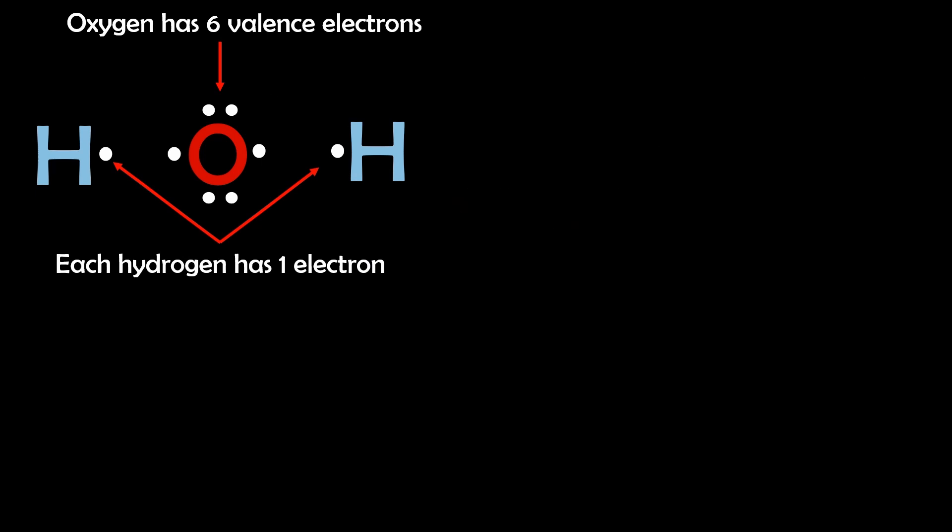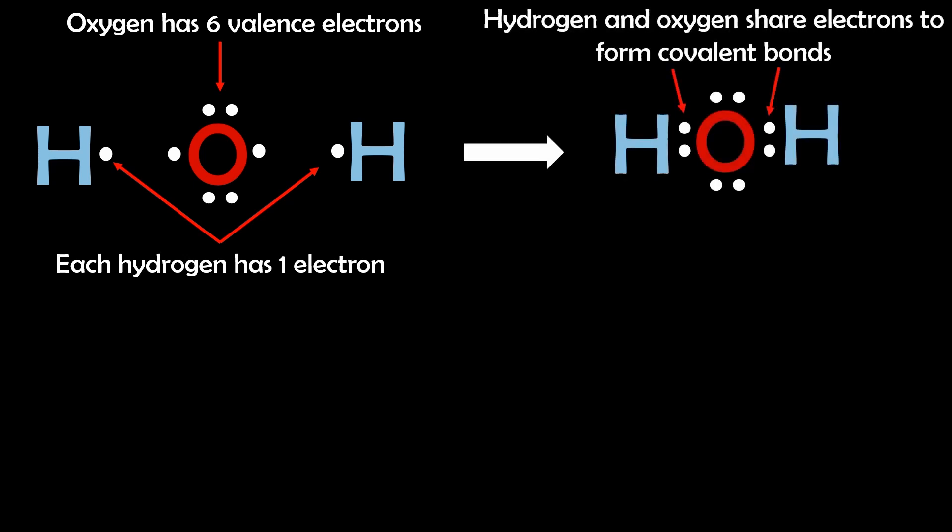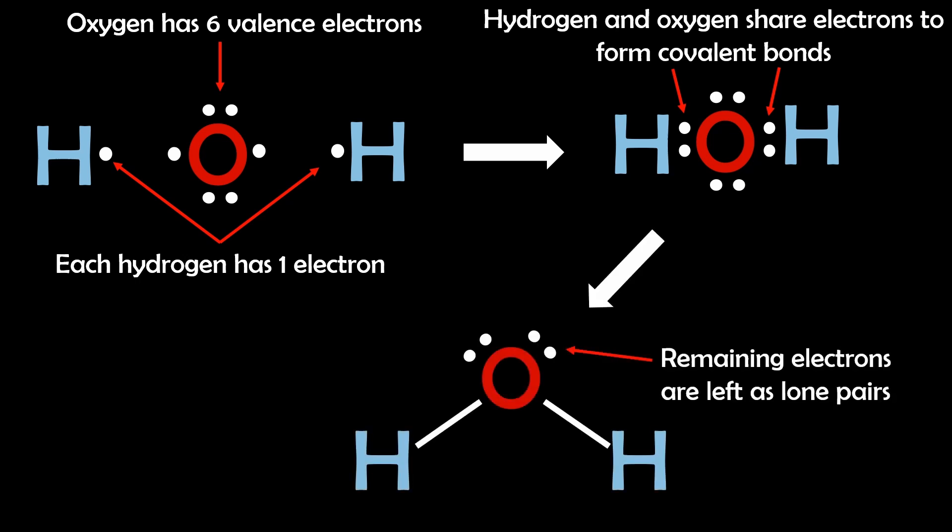For example in the Lewis structure of water the oxygen atom has six valence electrons and each hydrogen has one. Oxygen shares one electron with each hydrogen forming two covalent bonds. The remaining four electrons on oxygen are represented as two lone pairs.